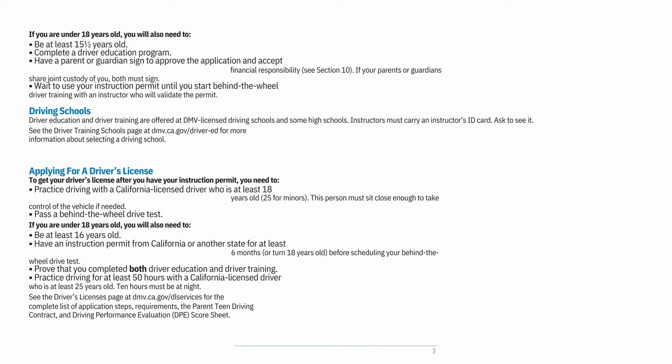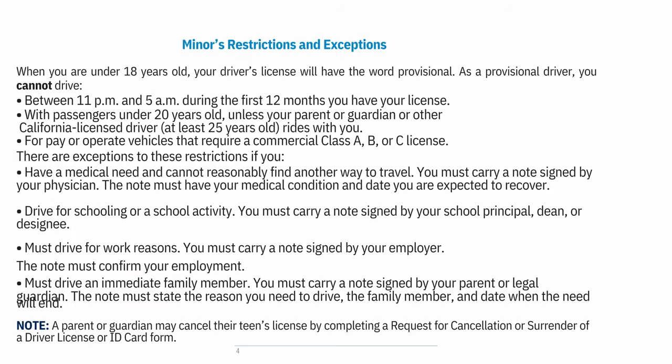See dmv.ca.gov/dl-services for the complete list of application steps, requirements, the parent-teen driving contract, and Driving Performance Evaluation (DPE) score sheet. Minors' restrictions and exceptions: When you are under 18, your driver's license will have the word 'provisional.' As a provisional driver, you cannot drive between 11 p.m. and 5 a.m. during the first 12 months you have your license.